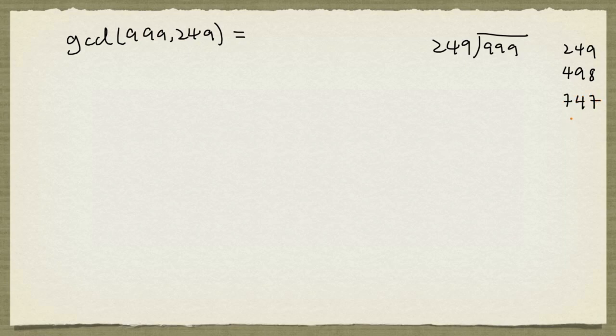And the next one is going to be 996. So this is just under 999. And so 4 times 249 is going to give us 996 with a remainder of 3.